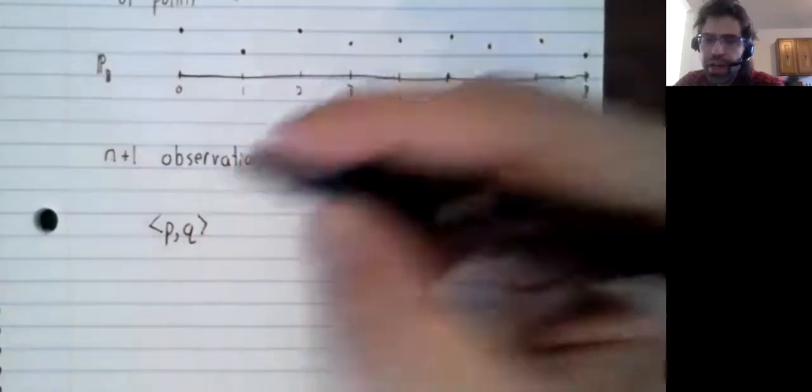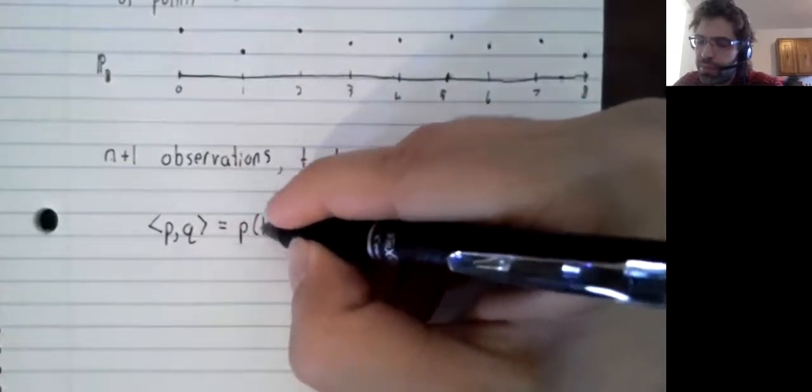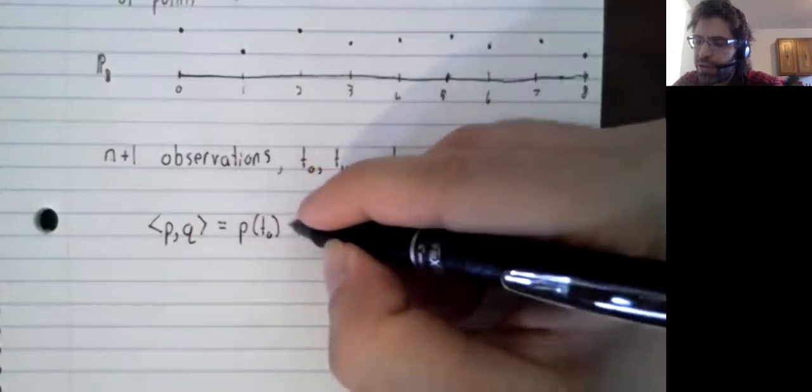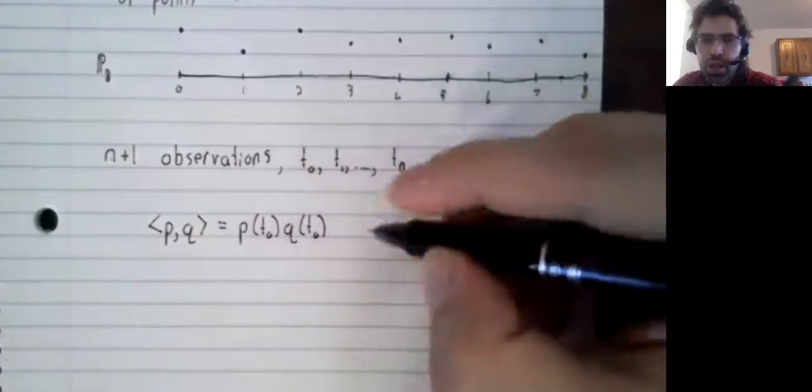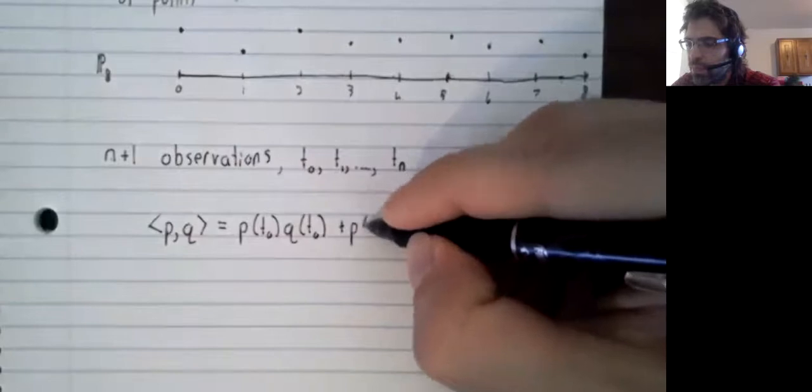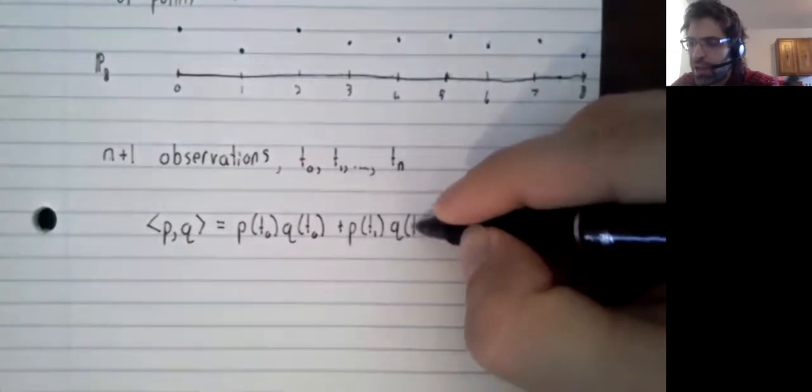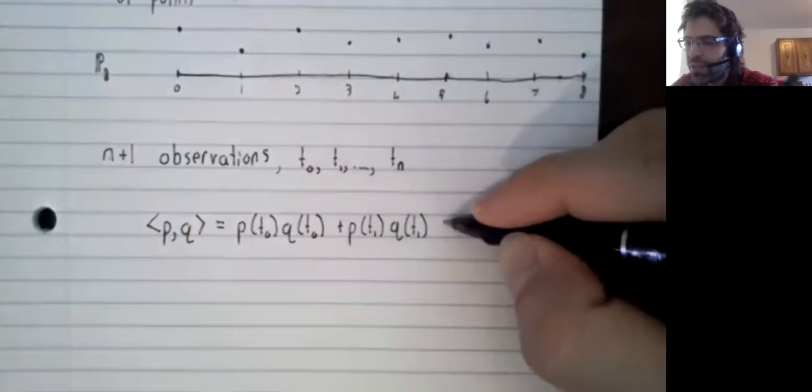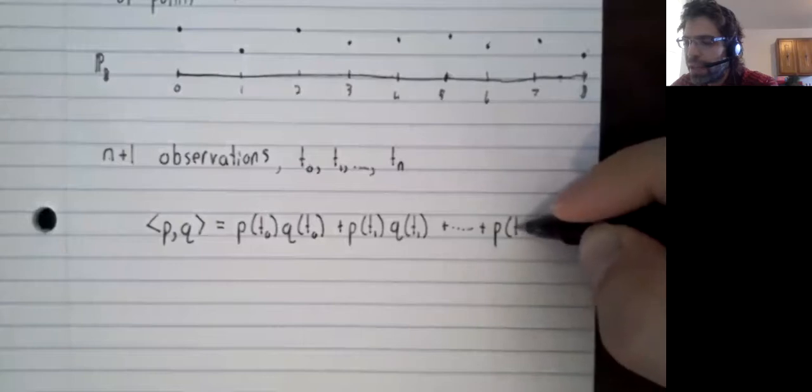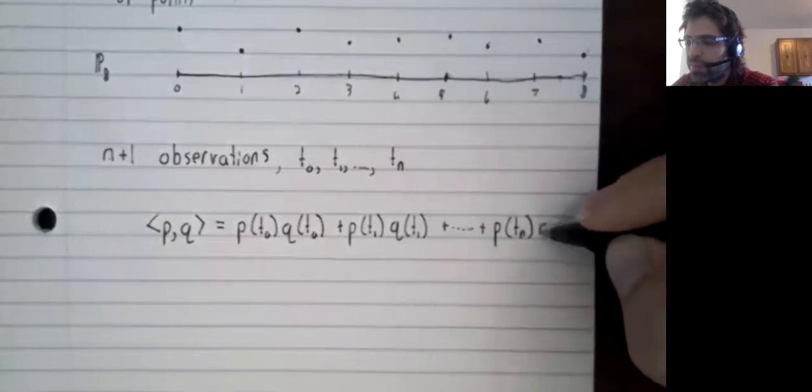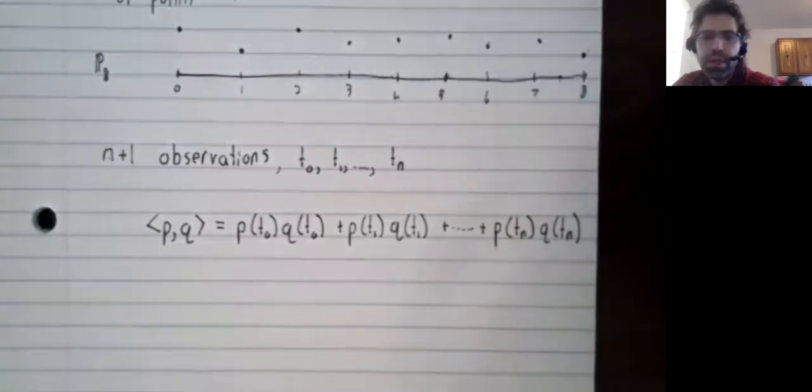Then we define the inner product of two polynomials very similarly to the way we define the dot product of vectors. We evaluate the polynomials at these points, then we multiply them pairwise and add them together.